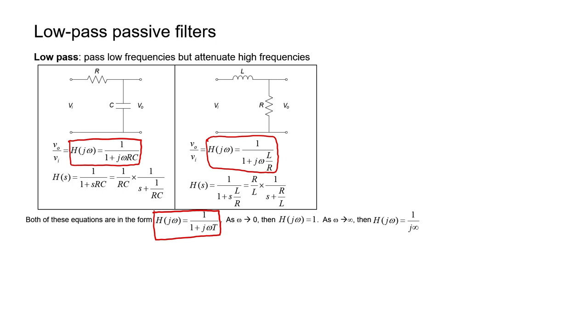RC, that is ohms times farads, has units of seconds. Similarly, L divided by R or henries divided by ohms also has the units of seconds. These are both time constants. It's an RC time constant or it's an L over R time constant. So here in the shared form, I'm calling it T.